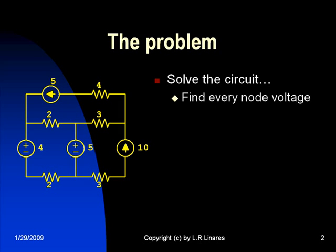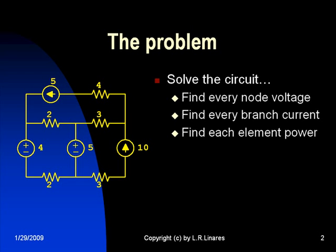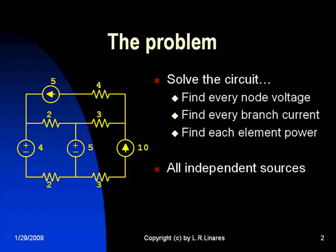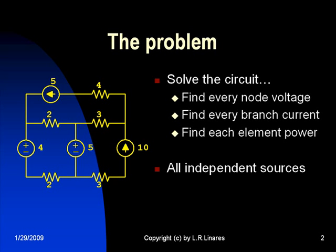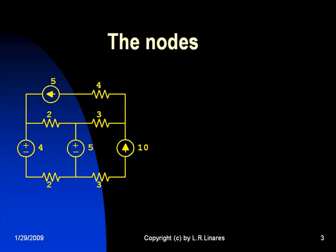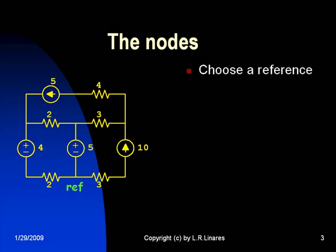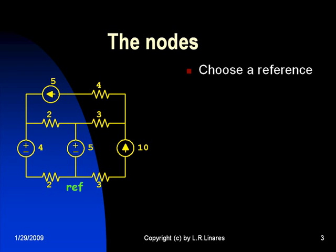Let's solve the circuit. By that I mean find the voltage of every node, find the current in every branch, find the power in every element, including whether the element is absorbing the power or delivering that power. Let's begin with the nodes. Choose a reference. In this case, I'm choosing the reference at the bottom.